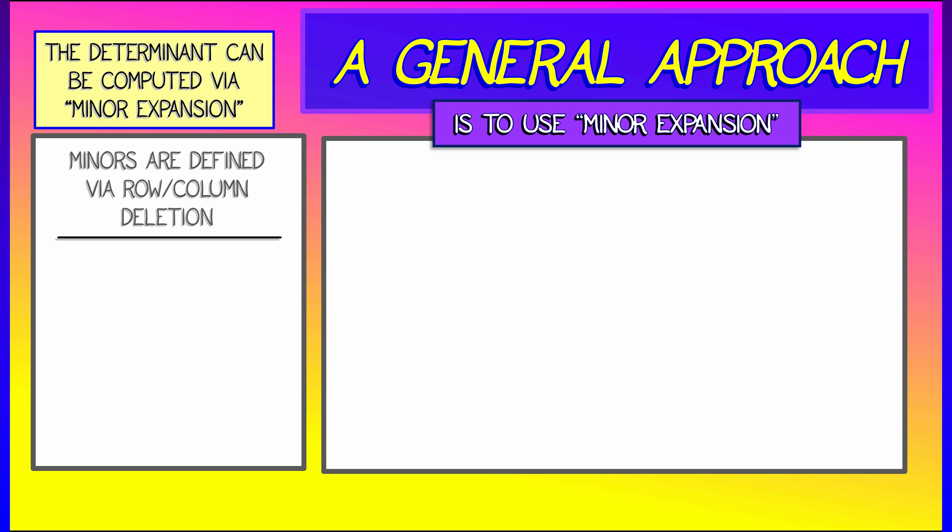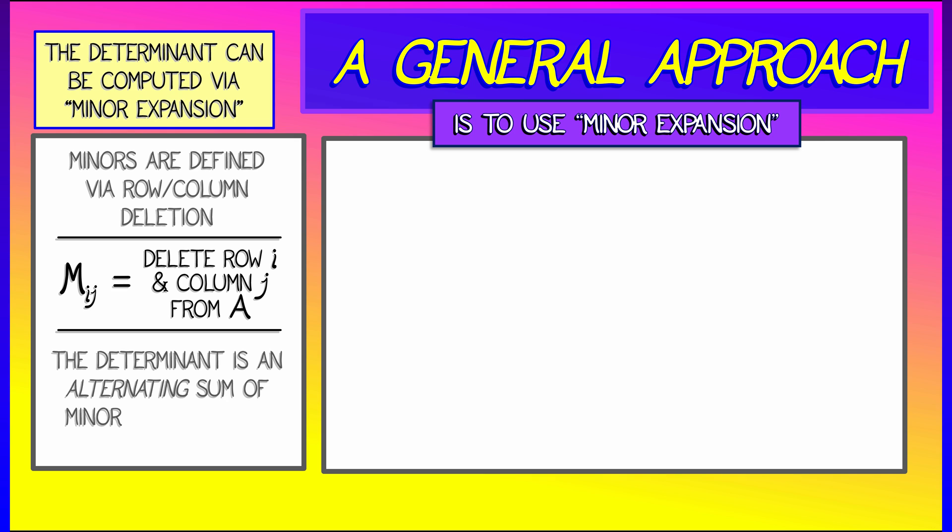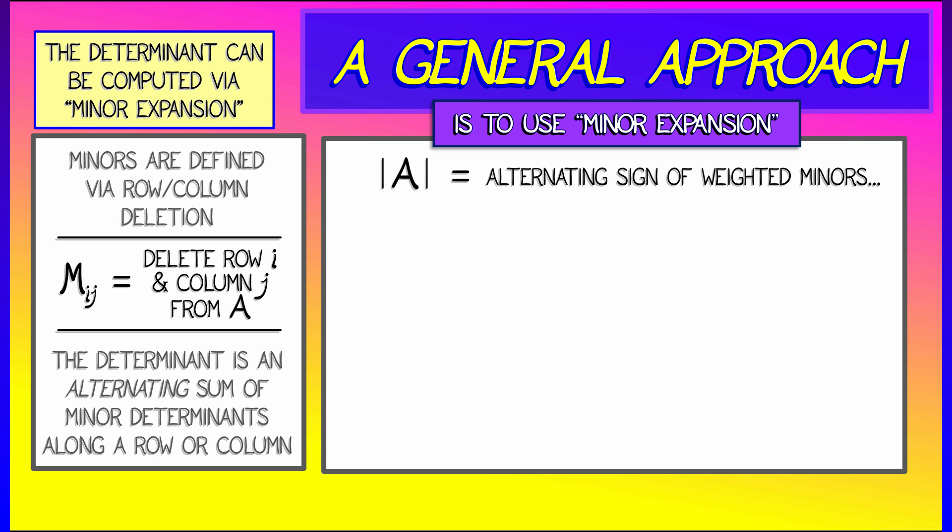In general, minors are defined via row and column deletion. The IJth minor of a matrix is what you get by deleting the Ith row, the Jth column from A, and then smushing everything else together to get a square matrix of one dimension lower. And in general, the determinant of A is an alternating sum of weighted minors. You have to keep track of the pluses and minuses here.